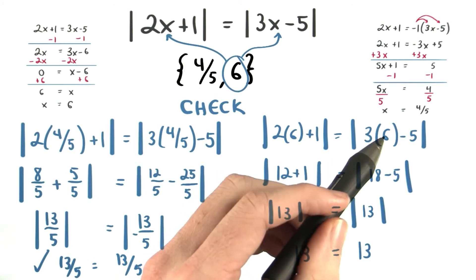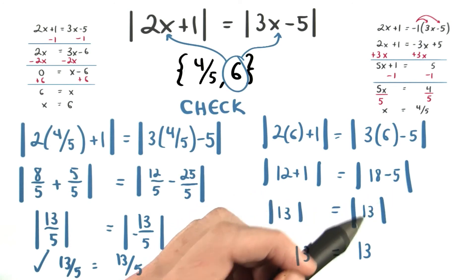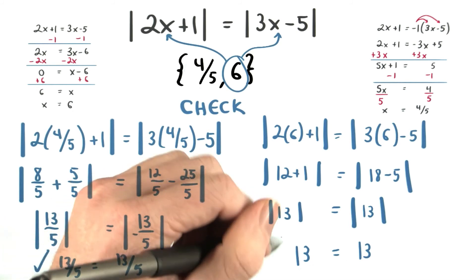On the right hand side, I have 3 times 6, which is 18. And the absolute value of 18 minus 5 is the absolute value of 13. And hey, look at that. 13 is equal to 13. That checks as well.